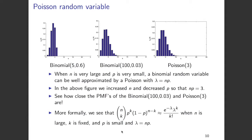More formally, the binomial probability that X equals k is n choose k times p to the power of k times 1 minus p to the power of n minus k. You can approximate this as e to the power of minus lambda times lambda to the power of k over k factorial, where n is large, k is fixed, p is small, and lambda equals np — which is essentially the Poisson distribution. So a binomial distribution can be approximated by the Poisson distribution when n is very large, p is very small, and n times p is moderate.